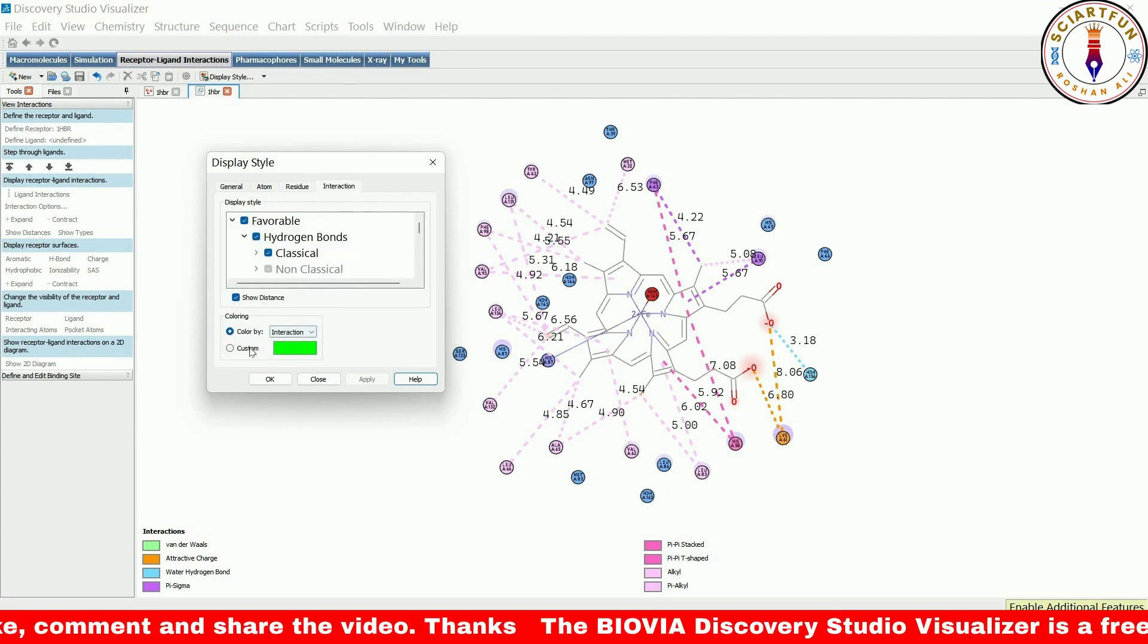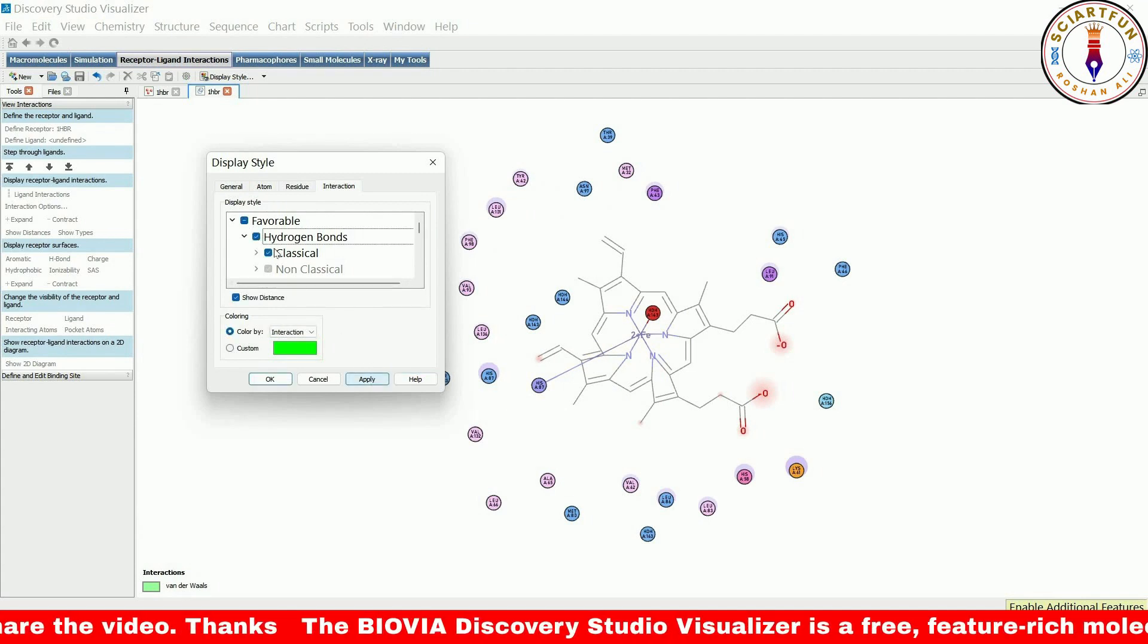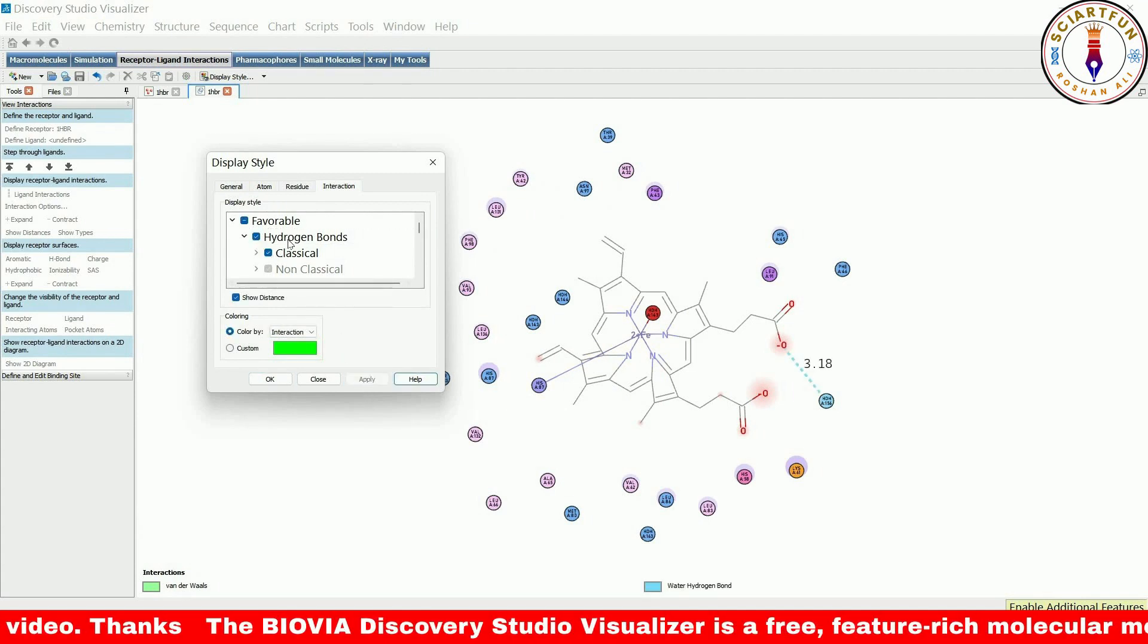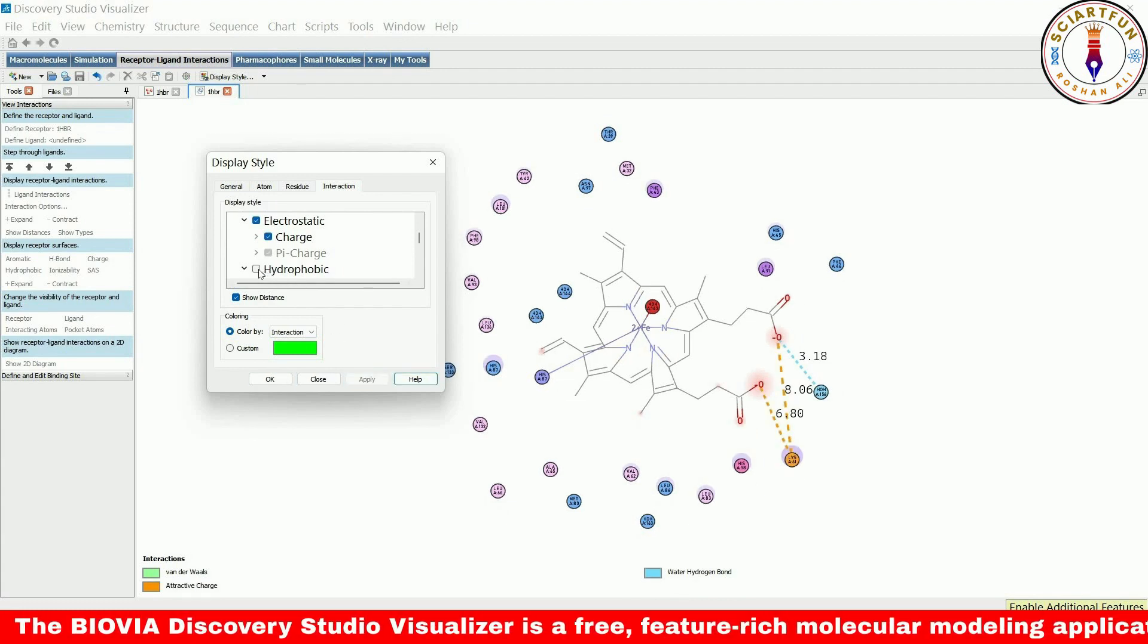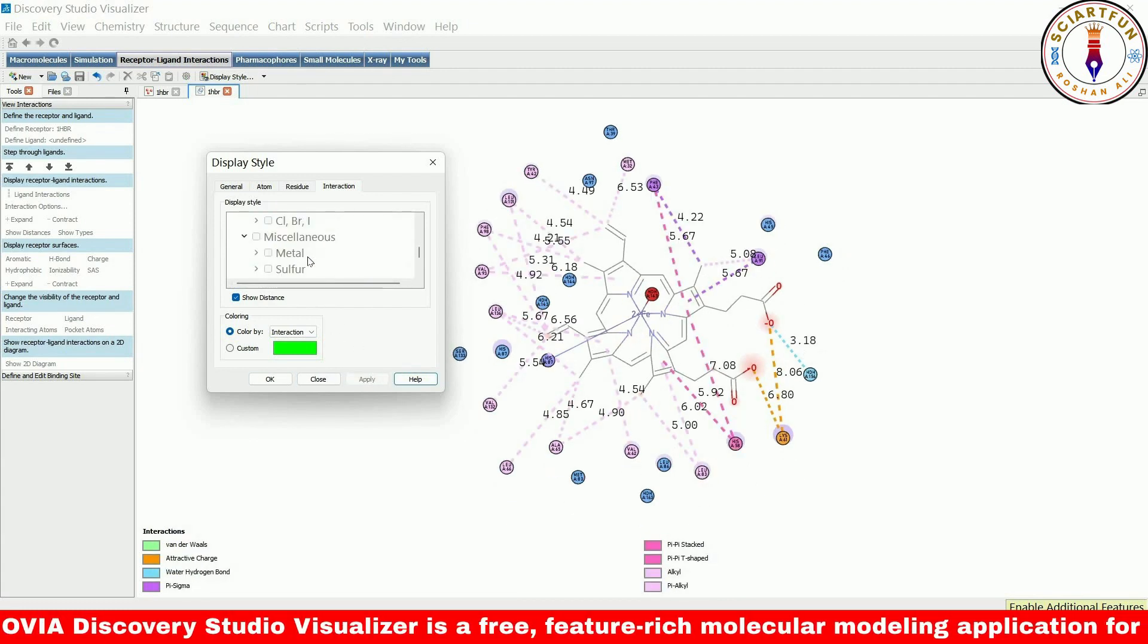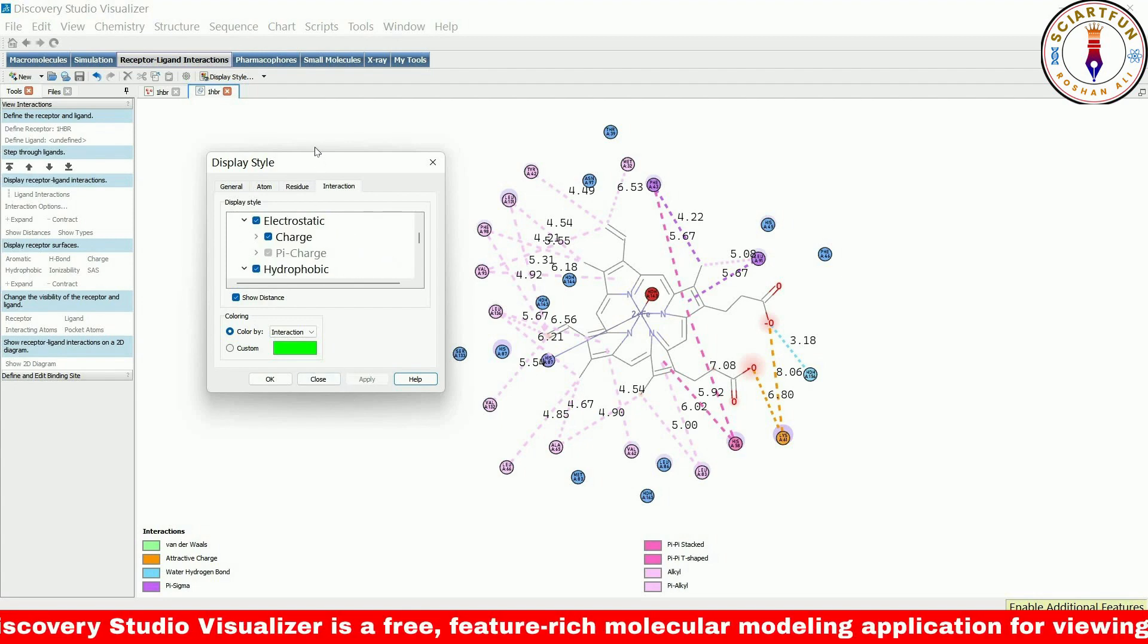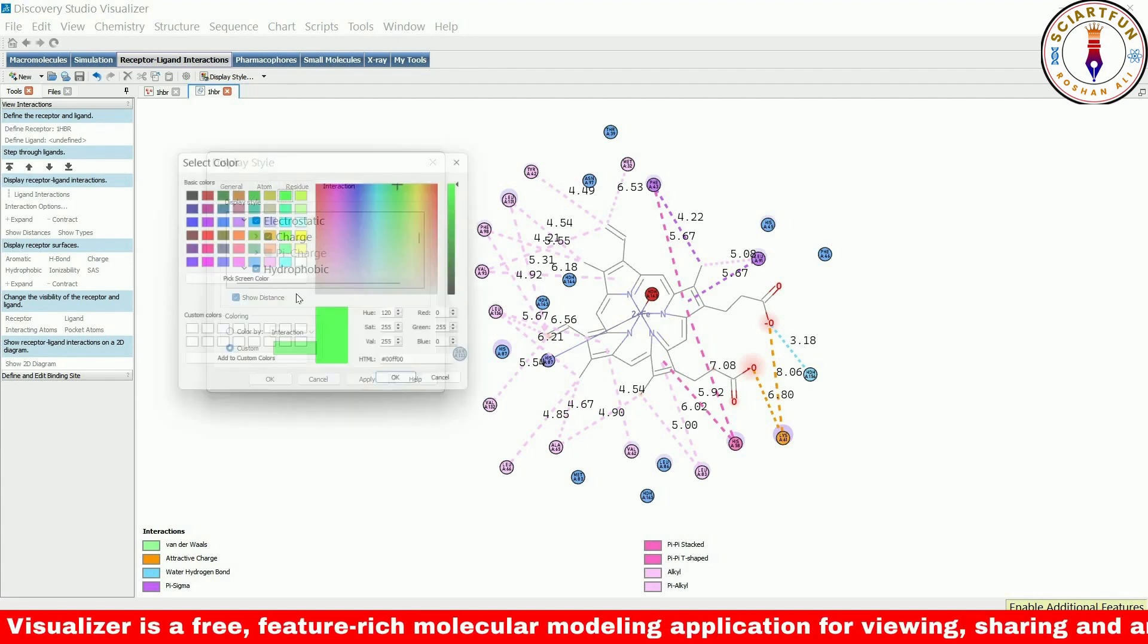In the interaction tab, we can control the appearance of the interactions. We have options to make them visible or hide them. We can also control the color of the interactions and make them all the same color.